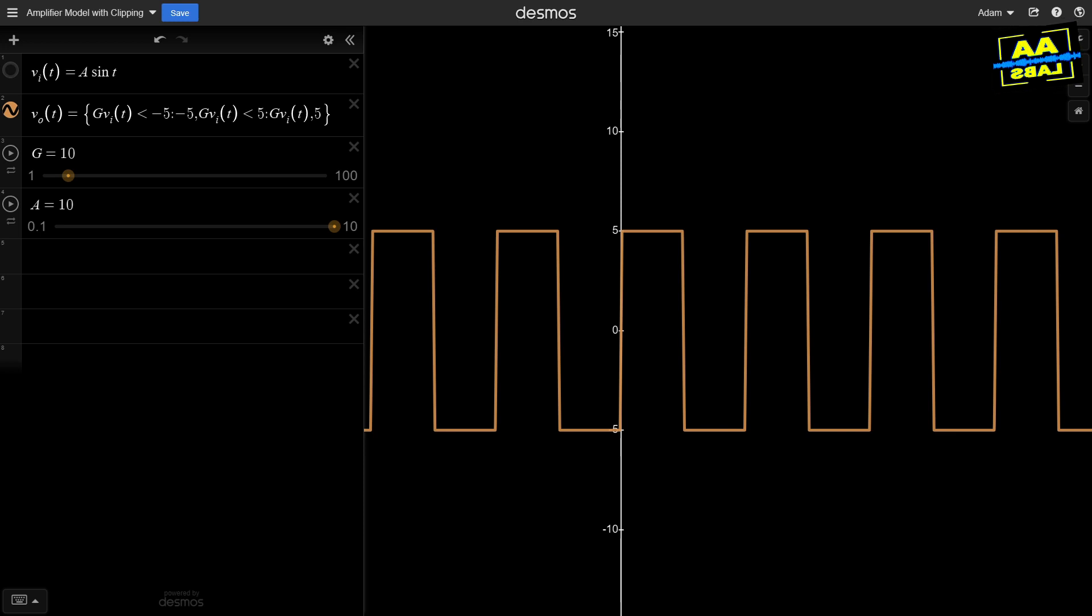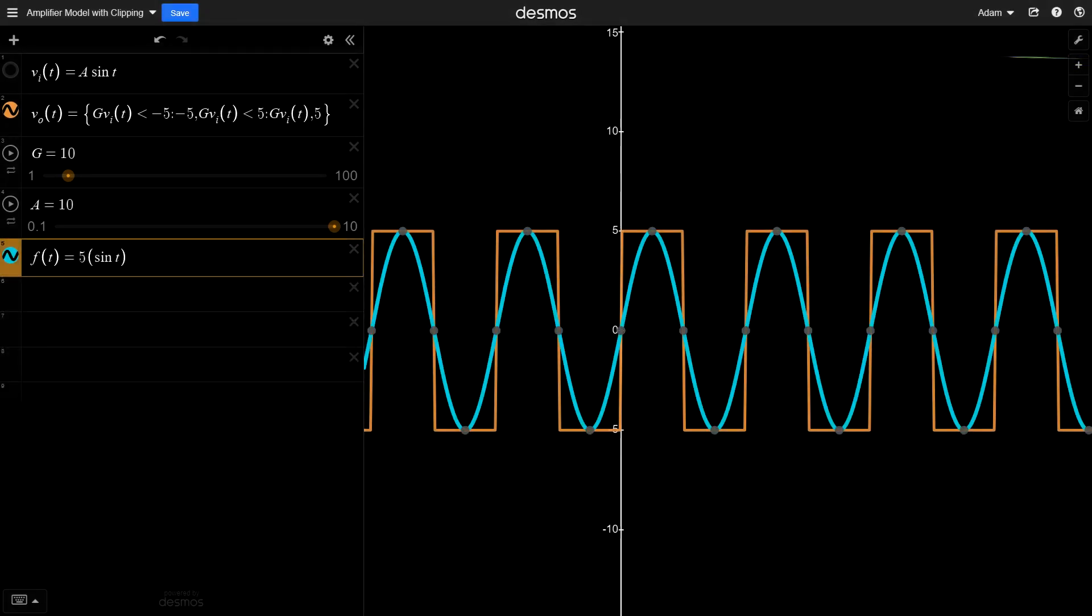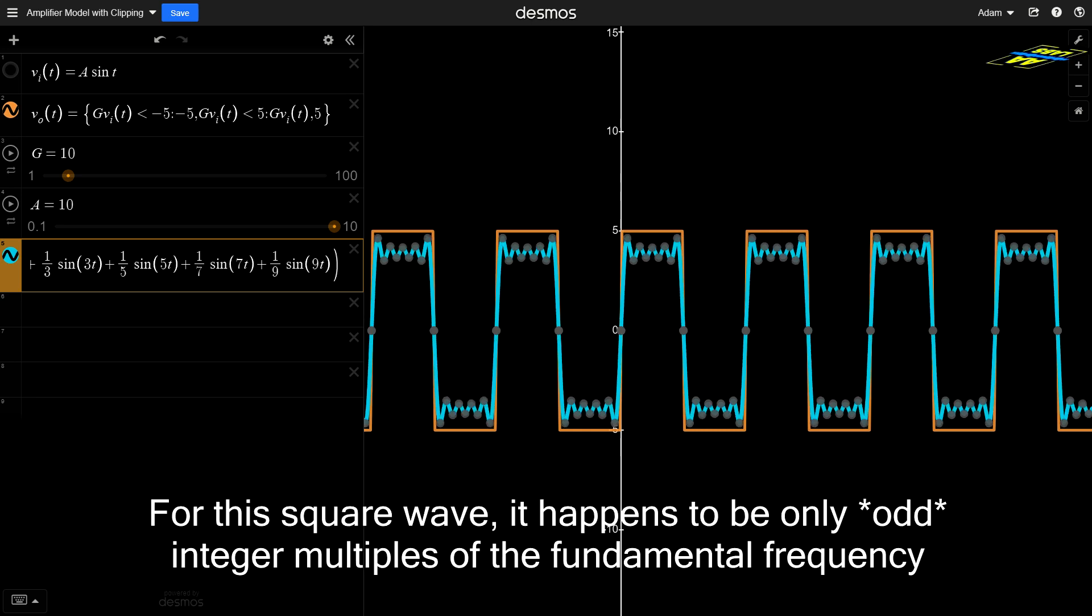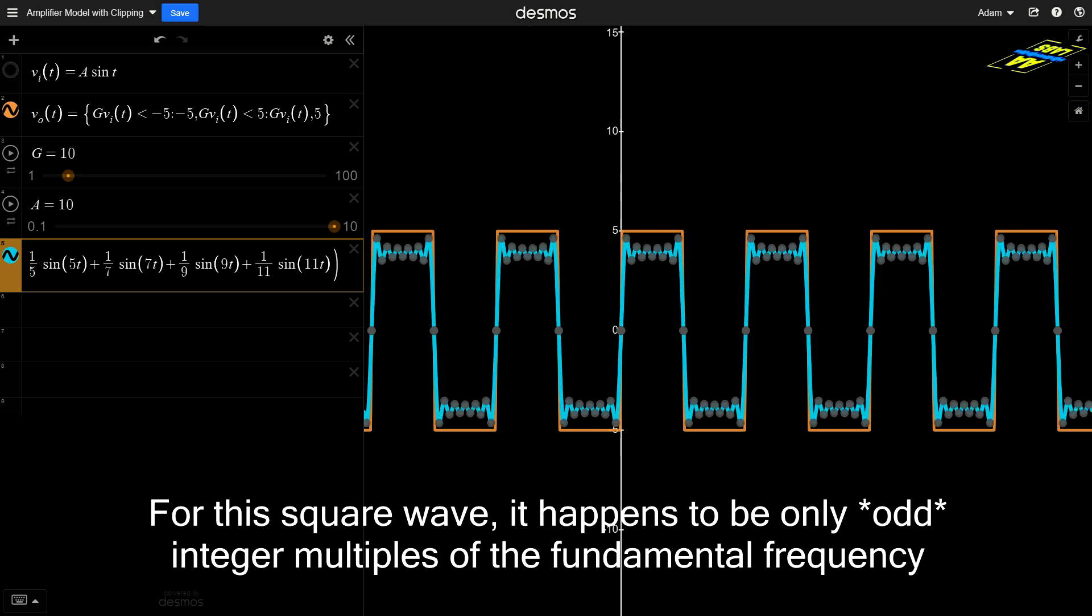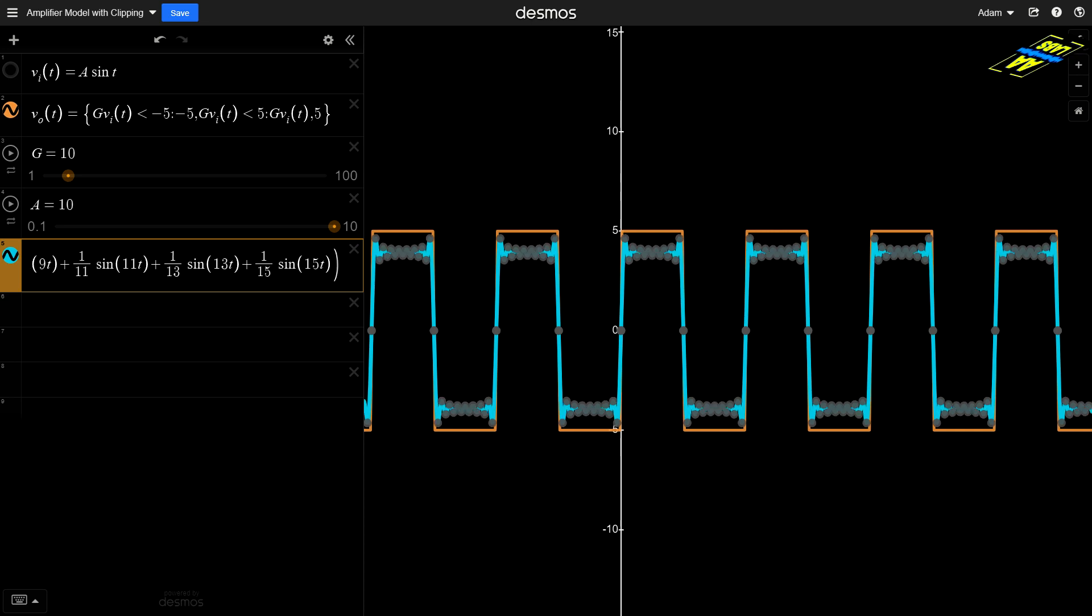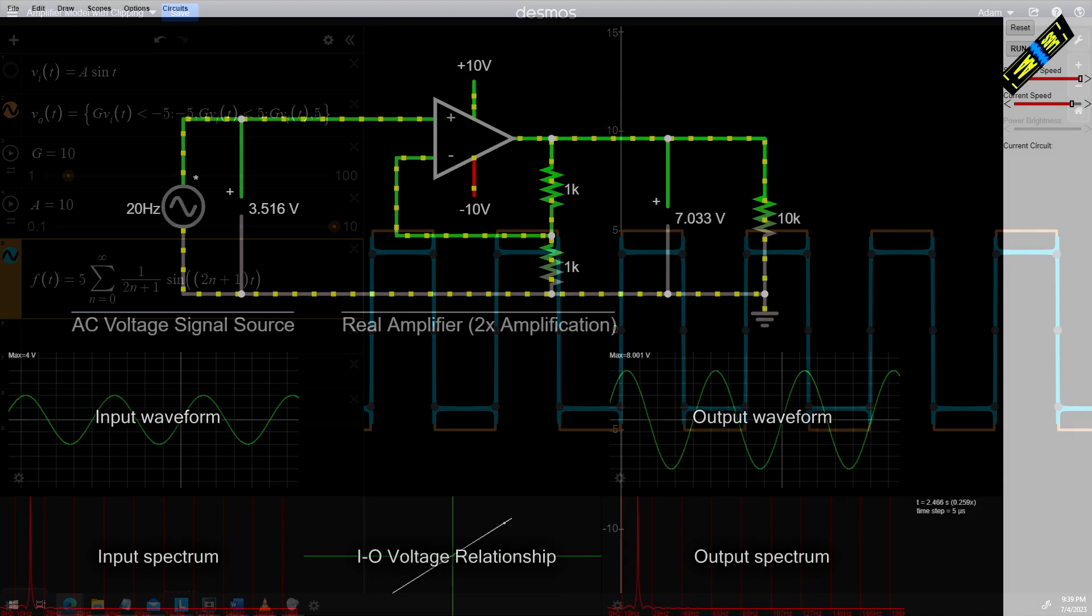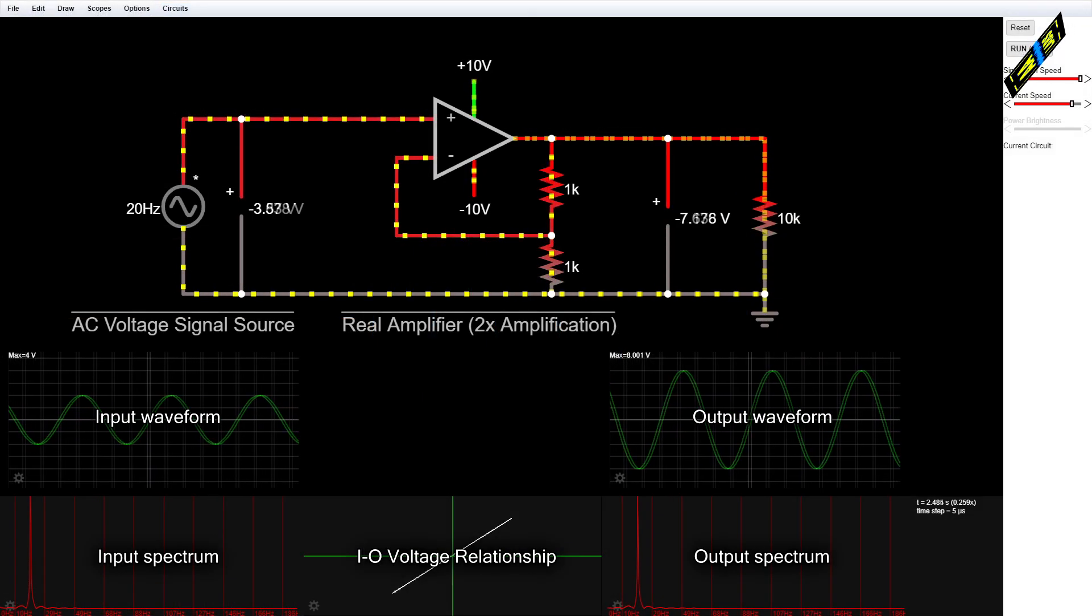But what does this mean in the frequency domain? Well, whenever a waveform is not a pure sinusoid but still has a fundamental frequency, that is, it repeats itself at a constant interval, it contains multiple frequency components, each at an integer multiple of the fundamental frequency. So this is exactly why harmonics are produced in amplifiers, non-linear circuits, and non-linear physical systems in general.